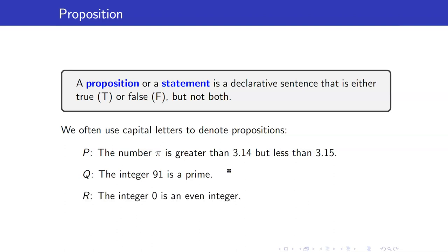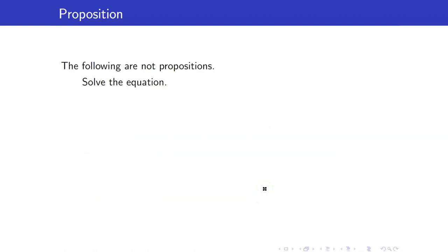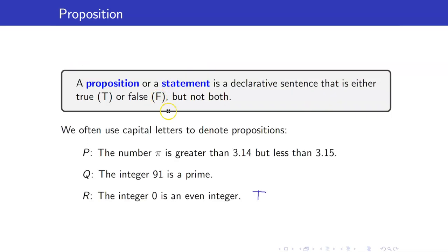The integer 91 is prime. This is a proposition with truth value of false because 91 is equal to 13 times 7. The integer 0 is an even integer — yes, this is a proposition, and this one is true. The following are not propositions. 'Solve the equation' is not a proposition because this is an imperative sentence or a command. Remember that a proposition has to be a declarative sentence.